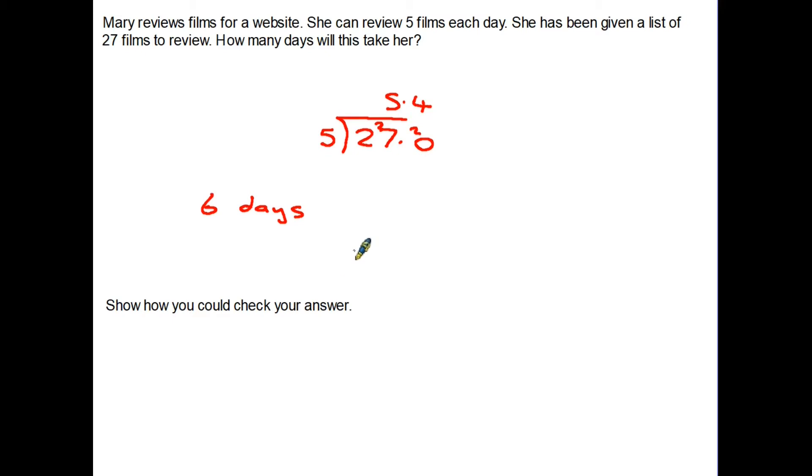Okay we've got our answer but once again a little line at the bottom: show how you could check your answer. Well the simplest way is to look at the sum you did in the first place. We did 27 divided by five is 5.4 days. So if we take the 5.4 days and we multiply it by the five we will find that our answer is 27 and that's how many films she needs to review.